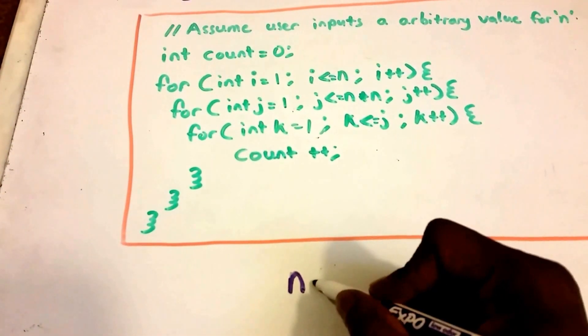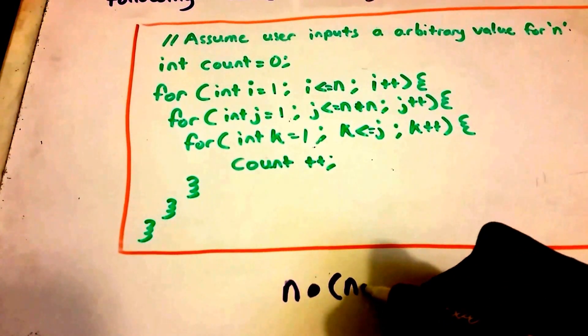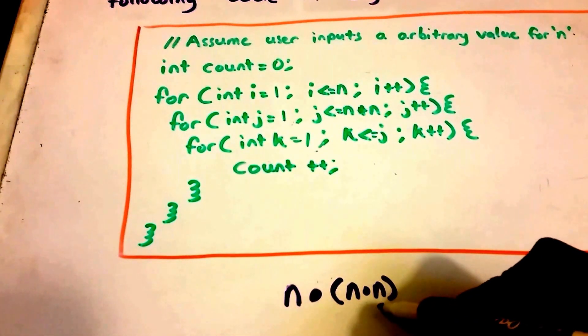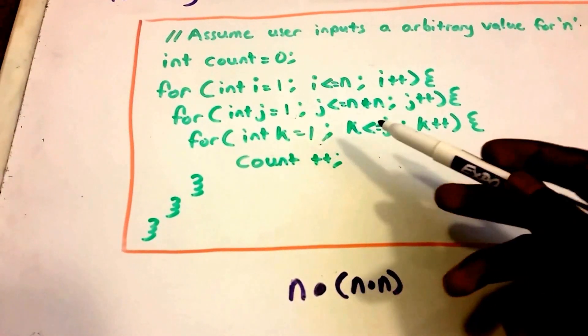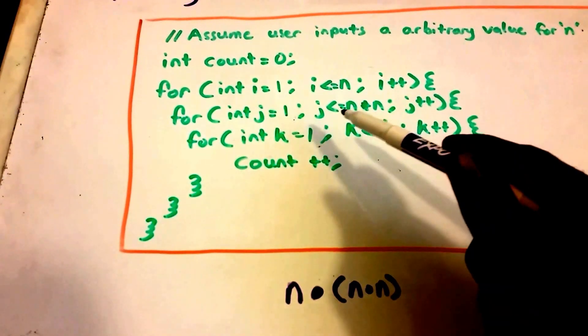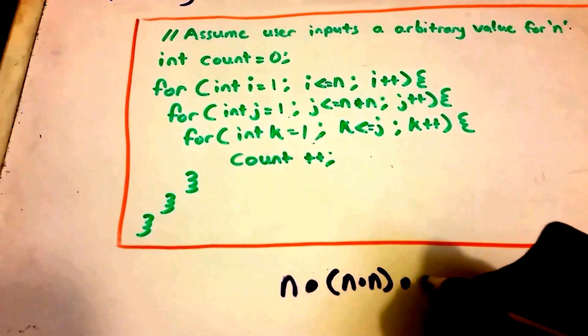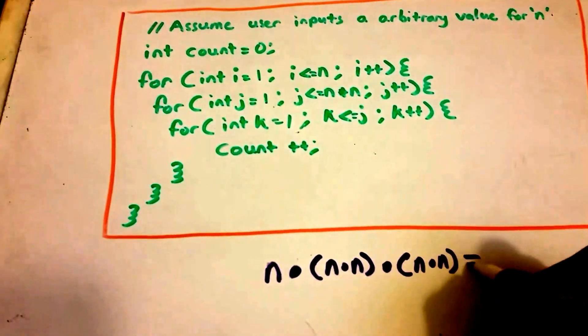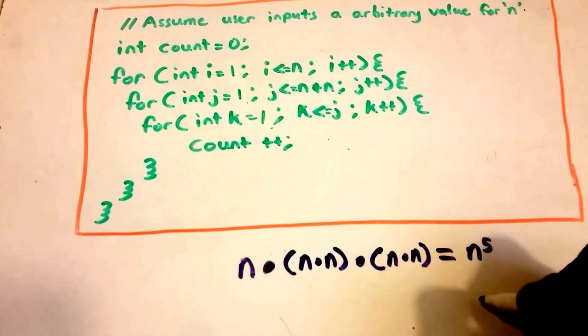So then we multiply that by our inner loop which is n times n or n squared. Then we have our third loop that runs j times. How many times does j run? Well j runs n times n times, so the third loop runs n times n as well.